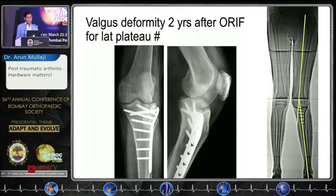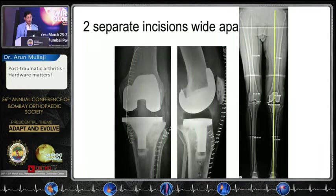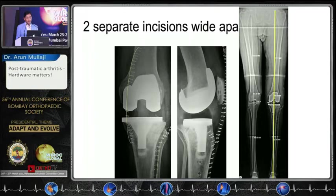You can see the plate and a large number of screws. We used two separate incisions which are wide apart — you can see the yellow lines marking them. We removed the implant at the same time as doing a total knee, and it went on to heal very well. You can see the alignment has been well restored.